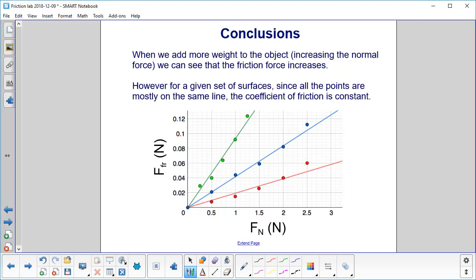When we added more weight to the object, and what was the weight equal to, the normal force, what did we notice about the friction force? Well, as we were going in this direction, the friction force was also increasing. However, for a given set of surfaces, so either all the red, all the blue, or all the green, we have the same coefficient of friction for each one. As the normal force goes up, the friction force goes up, but the coefficient of friction stays constant. That's the slope of the line.